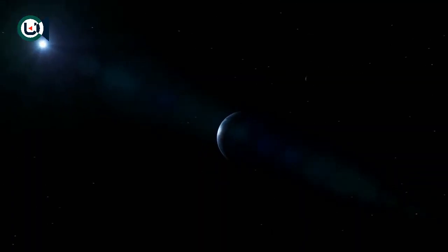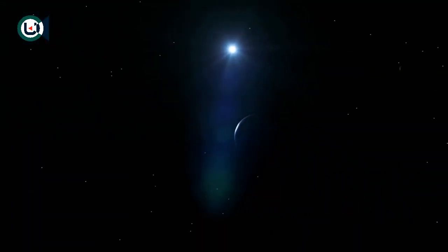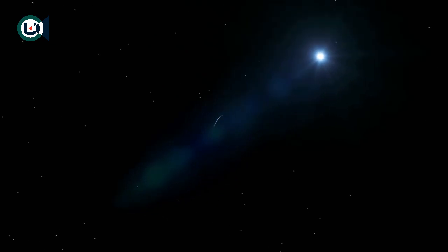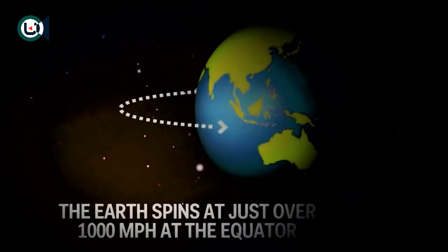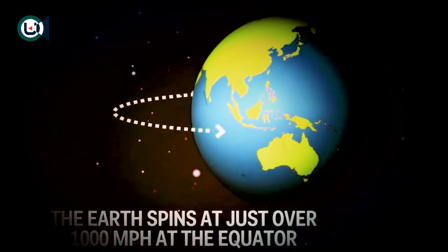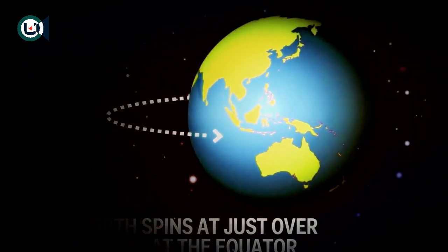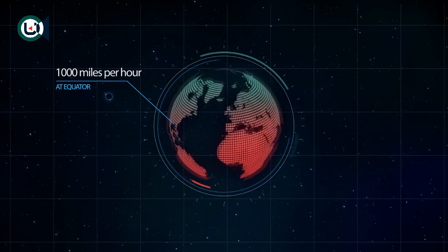But for the purpose of this mind experiment, let's take a look at the effects it would have on our planet to be tidally locked to our star, the Sun. First of all, we have to consider the speed of which our planet rotates at the equator, which is roughly 1,000 miles per hour.